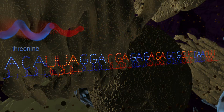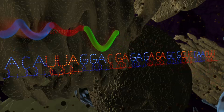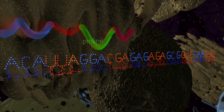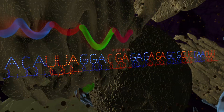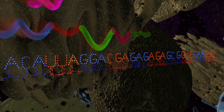A-C-A inserts threonine. U-U-A inserts asparagine. G-G-A inserts proline. C-G-A inserts arginine. G-A-G inserts leucine. And so on.